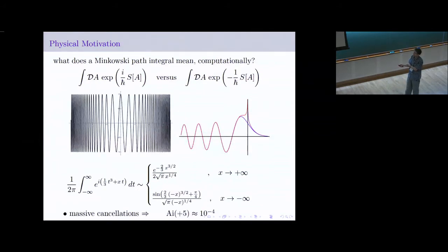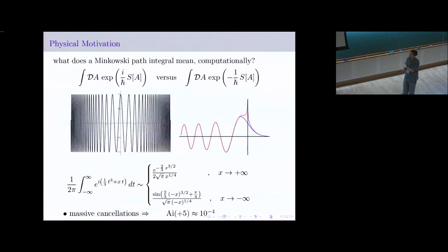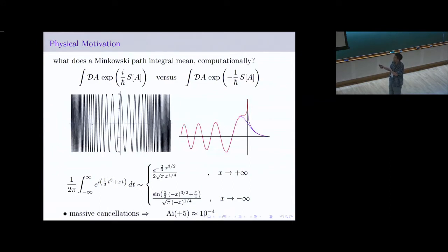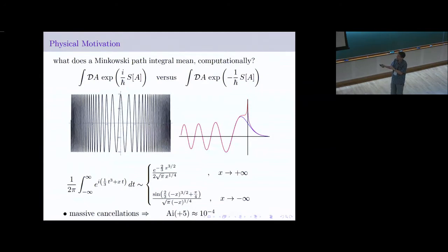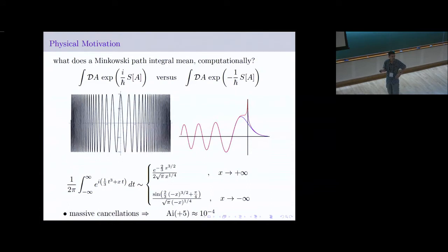The surprise is that as you vary the parameter x from positive to negative — changing its phase — the saddle point contribution changes dramatically. When x is positive, the behavior is governed by one saddle point. When x is negative, it's governed by two saddle points: there's e to the plus i and e to the minus i on that side, and just e to the minus on the other. I'll go through the details later in the context of resurgence.